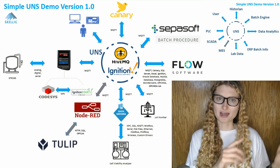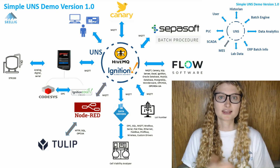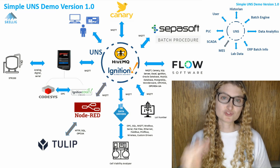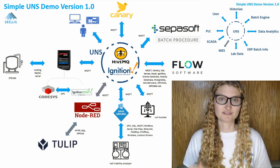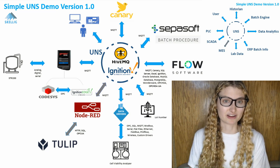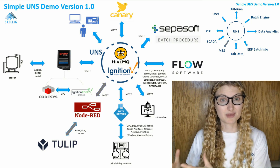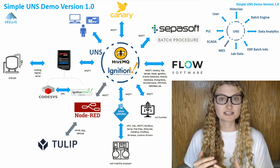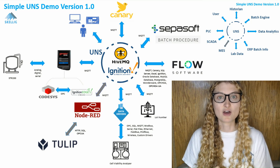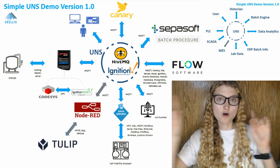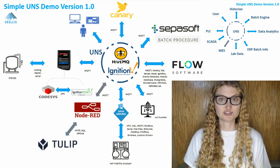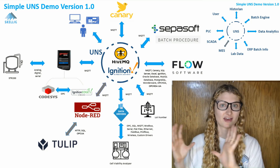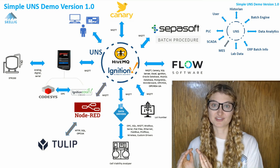I want to circle back to the UDT part, because when you're talking about building a UNS, it is the structured data and events of your business — that's imperative. The reason Ignition is in the middle is because we are using a lot of its UDTs and its functionality to get the data from all the different nodes organized as they join into our unified namespace.